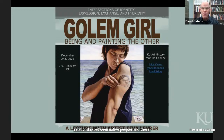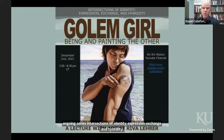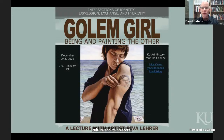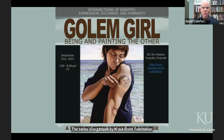I'm pleased to welcome you to another lecture in our ongoing series, Intersections of Identity, Expression, Exchange, and Hybridity. The series asks: what constitutes identity? How do people navigate and form and reform their sense of self? And how can the study of art and its history help us consider the diverse identities expressed by visual culture and its creators? We seek to amplify the voices of scholars and artists whose work explores individual and collective identities as those intersect with notions of the body, disability, gender, heritage, and race. The series is organized by KU's Crest Foundation Department of Art History and the Graduate Students of the History of Art, Diversity, Equity, Accessibility, and Inclusion Committee.